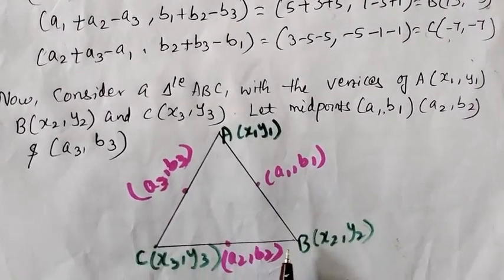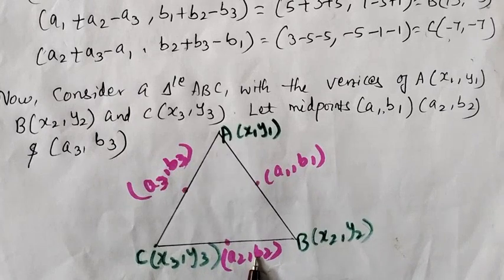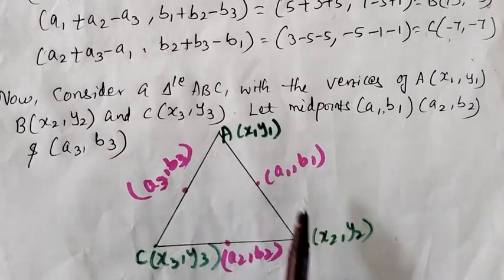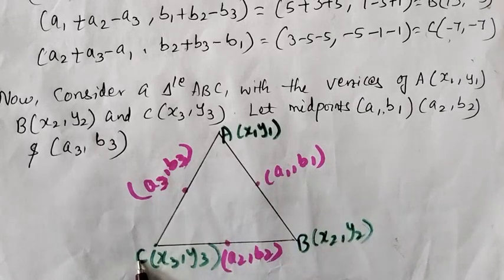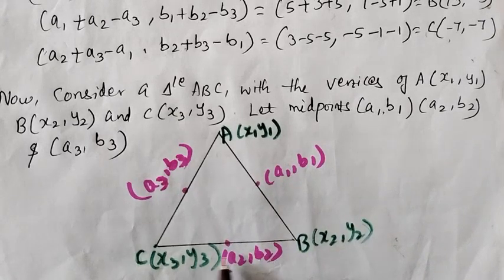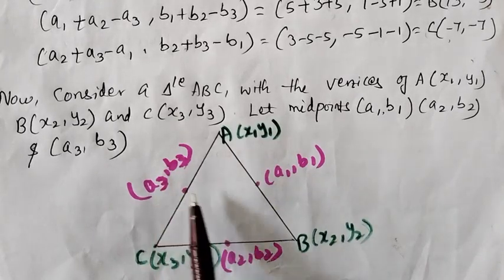Consider x1,x2, y2 and x3,y3. The midpoint of x1,y1 and x2,y2 is a1,b1. The midpoint of x2,y2 and x3,y3 is a2,b2. And the midpoint of x1,y1 and x3,y3 is a3,b3.